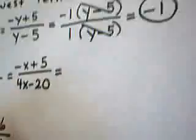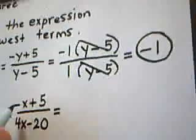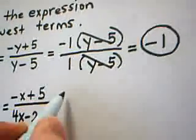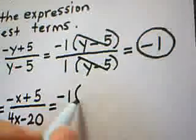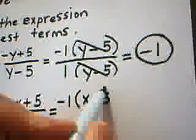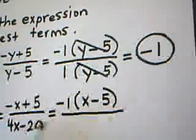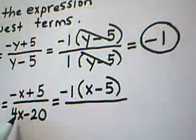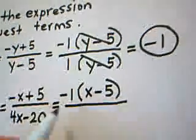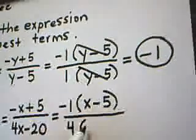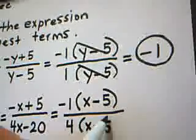Now, in the numerator, when I factor, I do take out a negative 1 again. I pull out a negative 1. In parens, that leaves me with x minus 5. In the denominator, I factor out a 4. That's my GCF. And in parens, that leaves me with x minus 5.